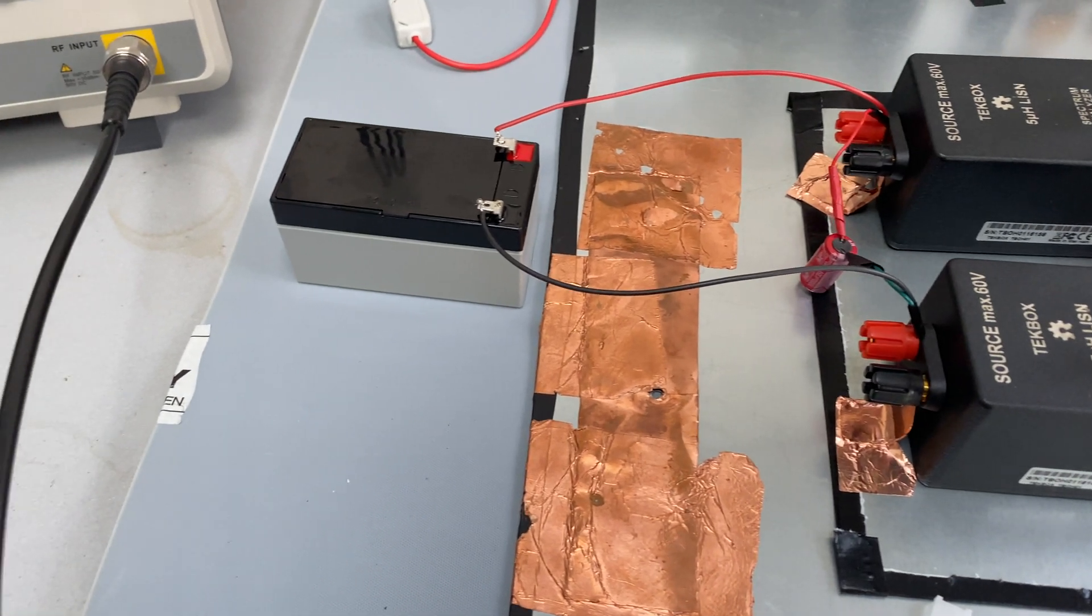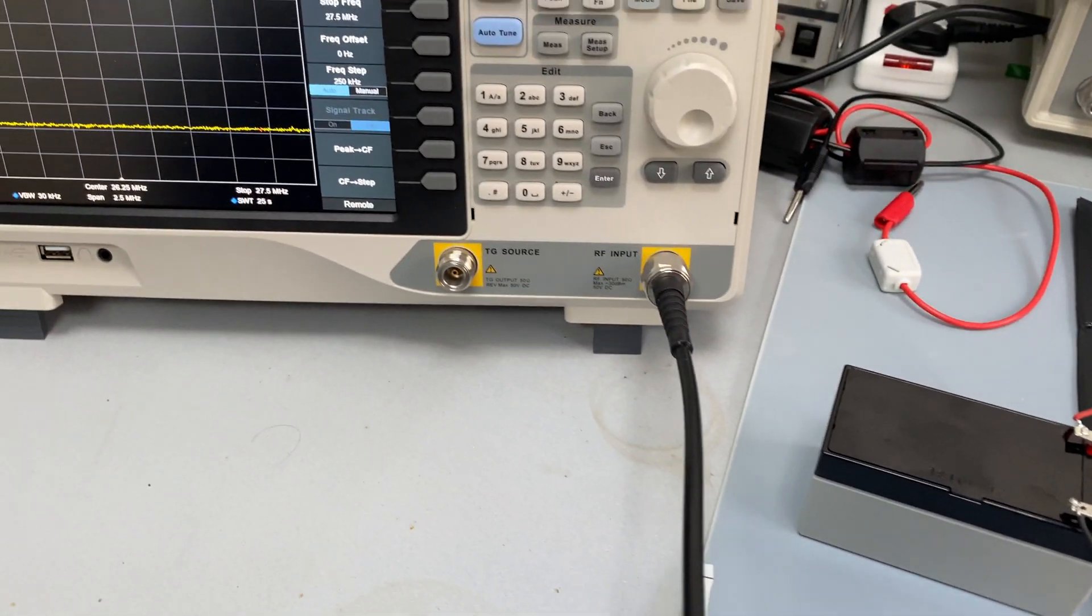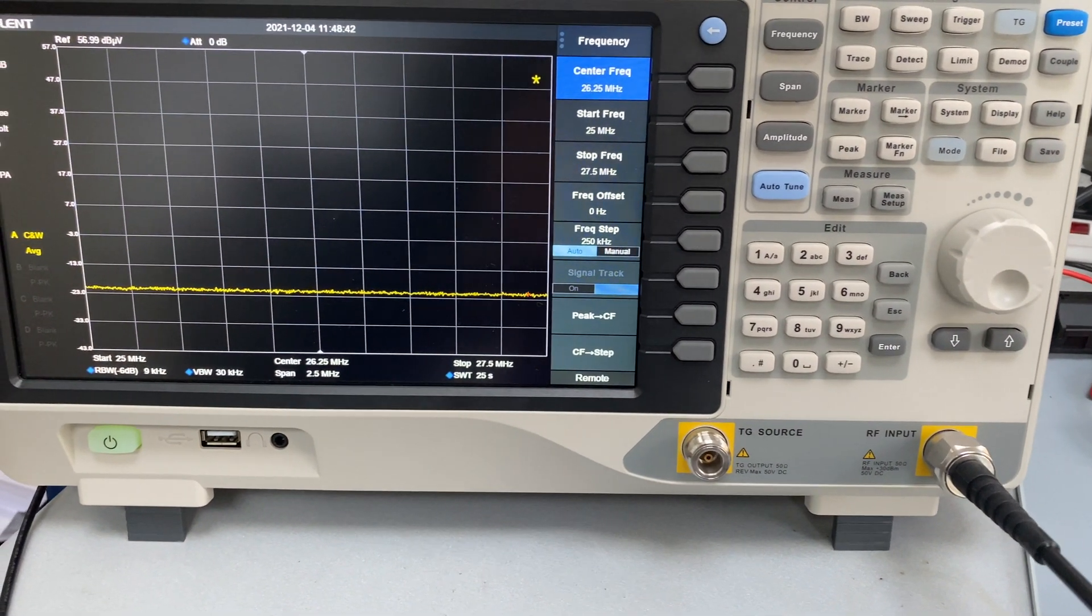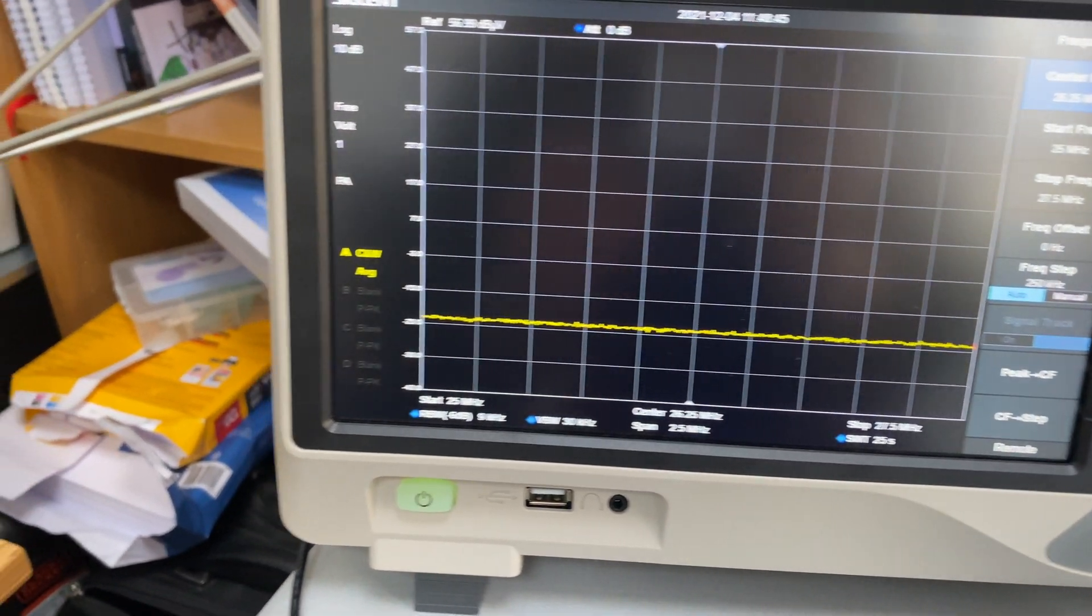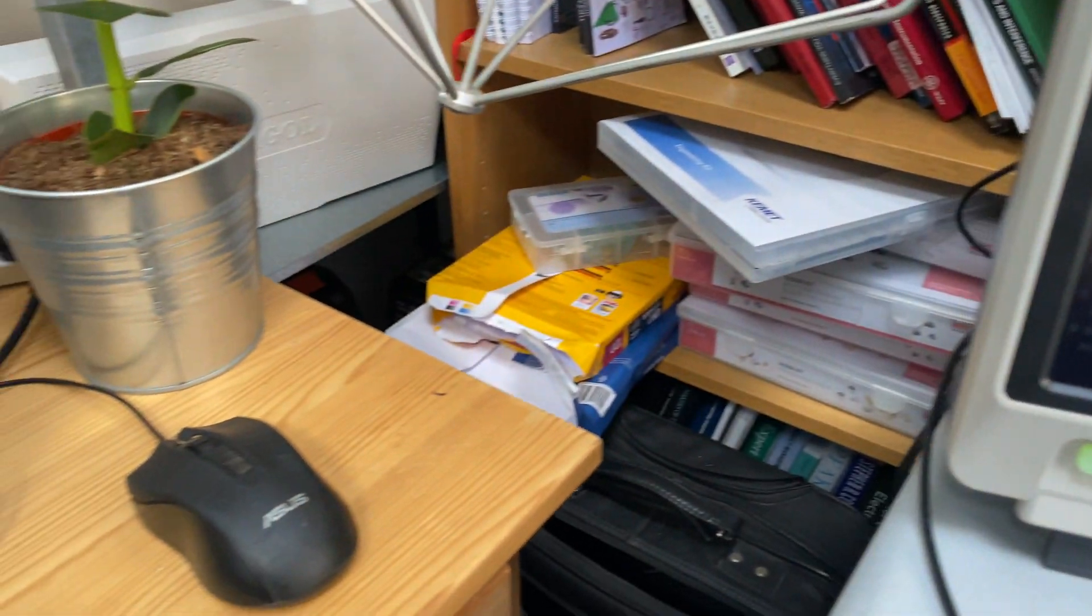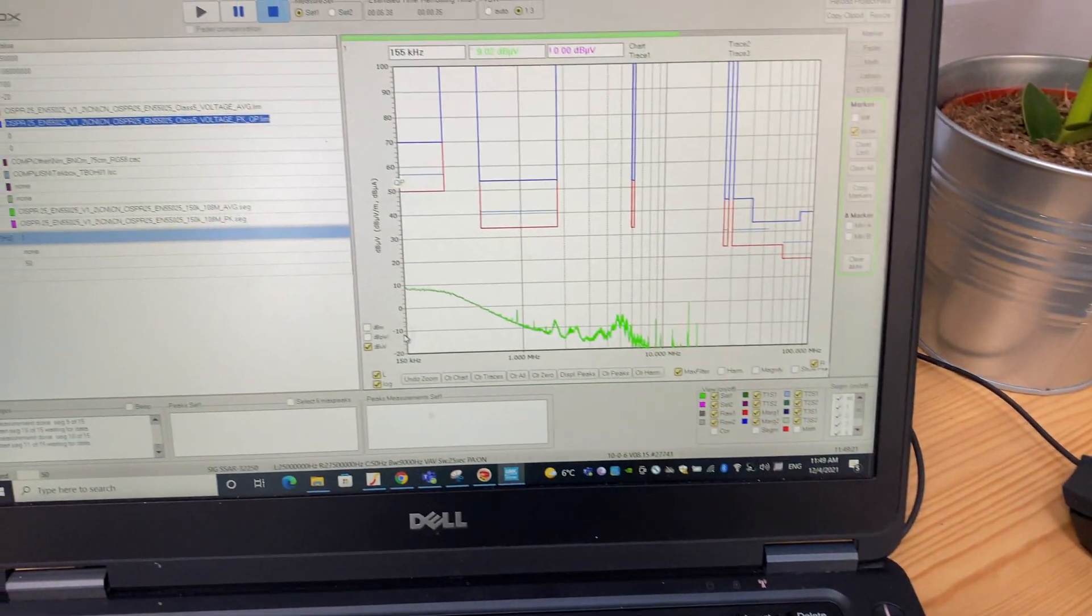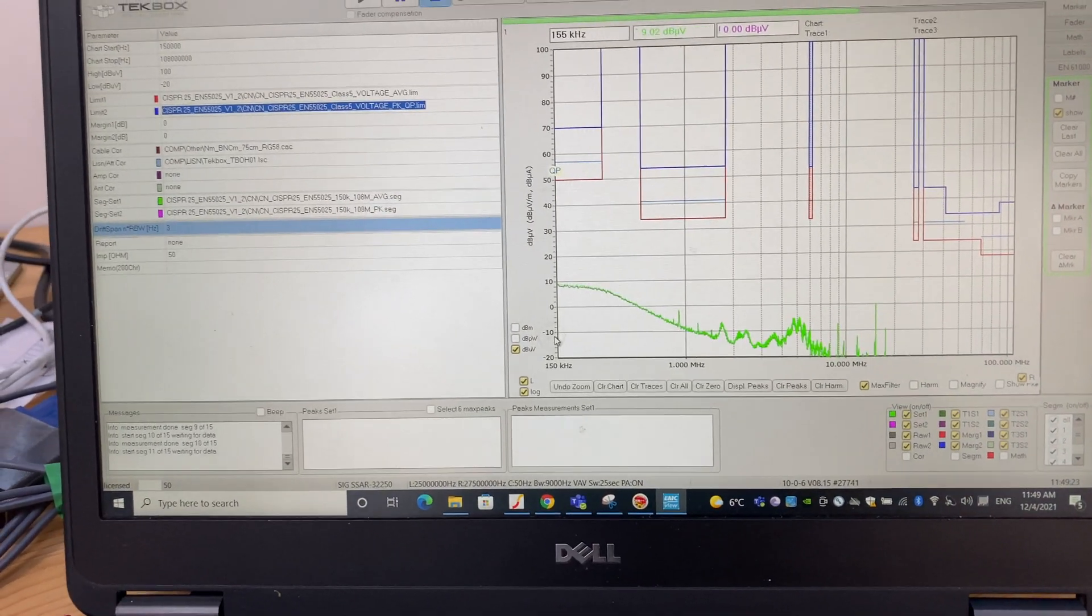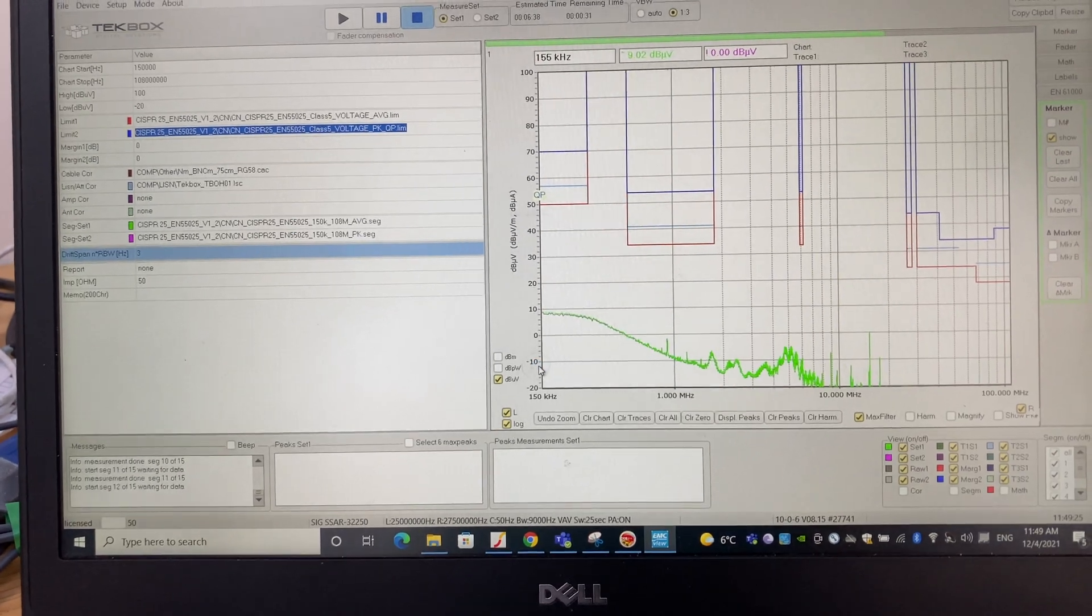We power it with a 12 volts battery, and then the LISN output is connected to a spectrum analyzer, which does the EMC scan. In this case, it's from 150 kilohertz to 108 megahertz. The scanning is completely controlled automatically by the EMC view software, and simply click start, the scan will basically start automatically.